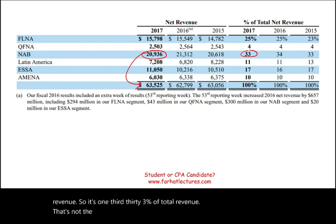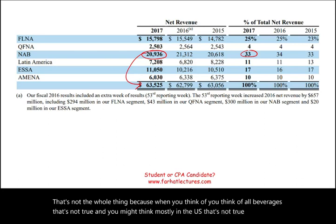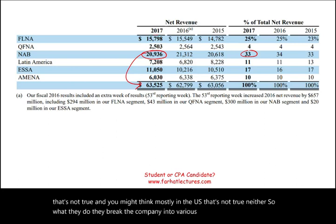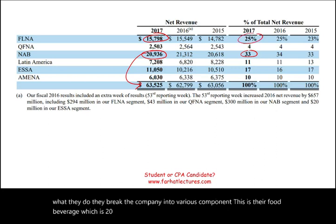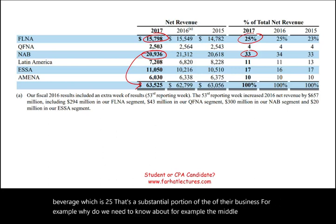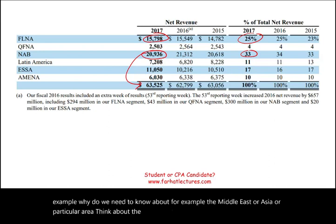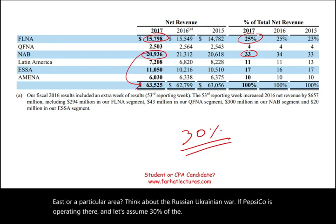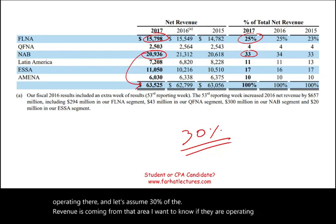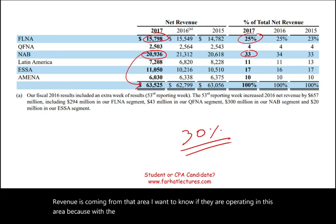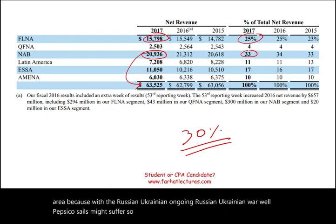That's not the whole picture. When you think of PepsiCo you might think mostly beverages in the US, but that's not true. So what they do is break the company into various components. Their food and beverage segment represents 25%, a substantial portion of their business. For example, why would we need to know about the Middle East or Asia? Think about the Russia-Ukraine war — if PepsiCo is operating there and 30% of their revenue comes from that area, PepsiCo's sales might suffer.